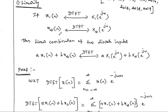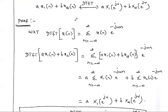According to the linearity property, the DTFT of the linear combination of two inputs — that is a·x1(n) + b·x2(n), where a and b are scalar constants — equals a·X1(e^jω) + b·X2(e^jω). This is the linearity property: computing DTFT of the combined signal gives the same result as the sum of individually scaled DTFTs.